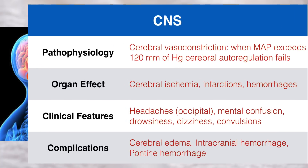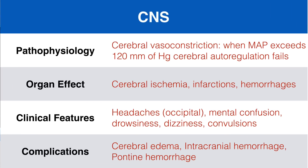First, the central nervous system. There is diffuse arterial vasoconstriction leading to cerebral ischemia, infarction, and edema. When the mean arterial pressure exceeds 120 mmHg, cerebral autoregulation fails. Failure of cerebral autoregulation results in petechial hemorrhages and rarely frank intracranial hemorrhage, especially in the presence of hypertensive crisis. This leads to symptoms like occipital headaches, mental confusion, drowsiness, dizziness, and convulsions. Pontine hemorrhages associated with pinpoint pupils and hyperreflexia may be seen rarely.